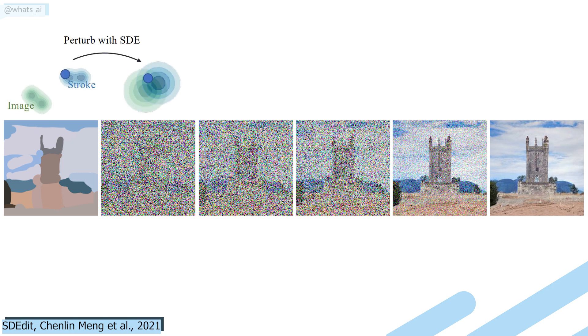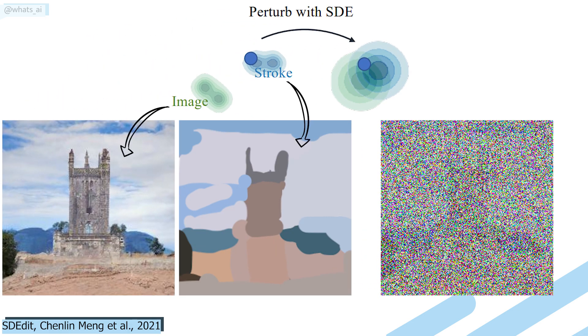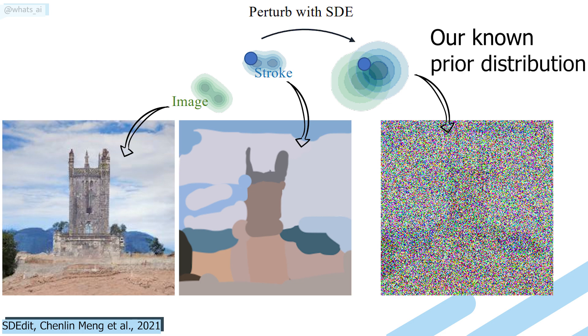This model, called SDEdit, uses Stochastic Differential Equations, or SDEs, which means that by injecting Gaussian noise, they transform any complex data distribution into a known prior distribution. This known prior distribution is seen during training, and this is what the model is trained on to reconstruct the image.